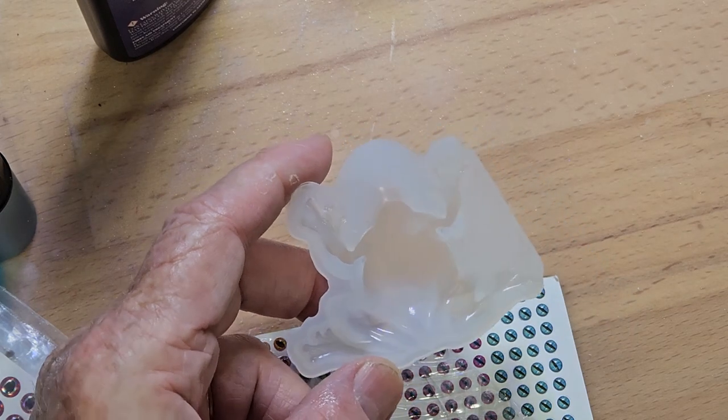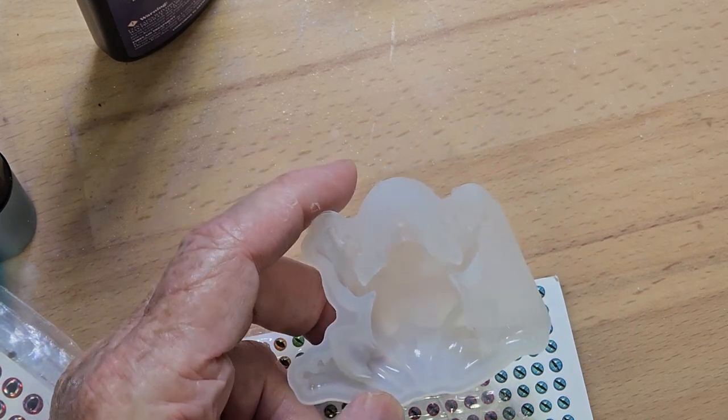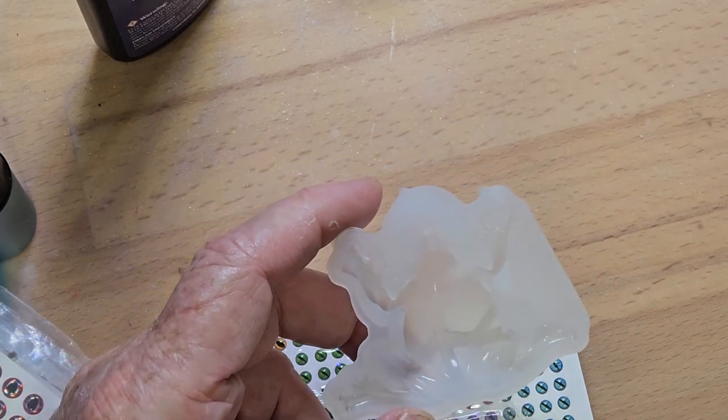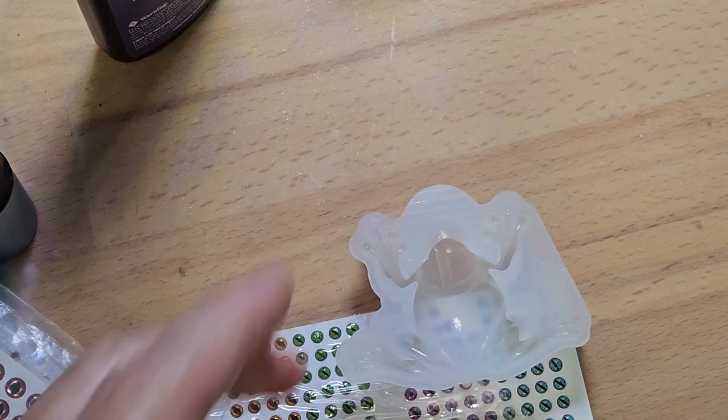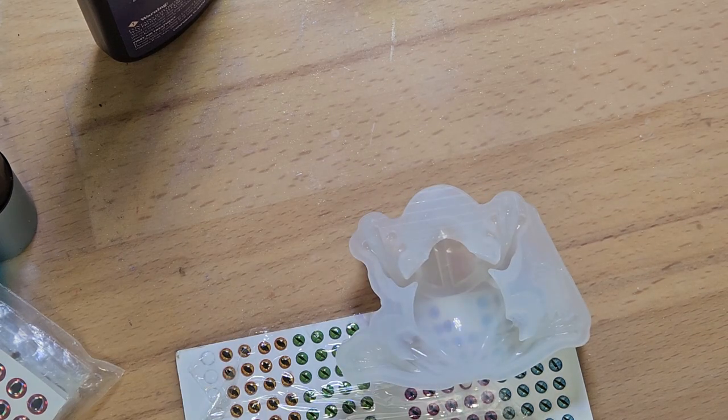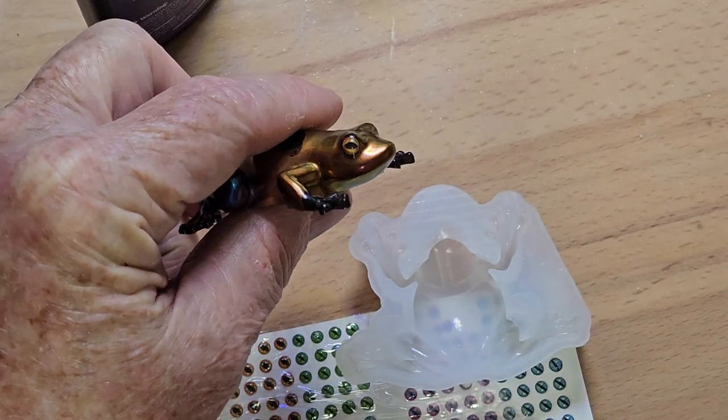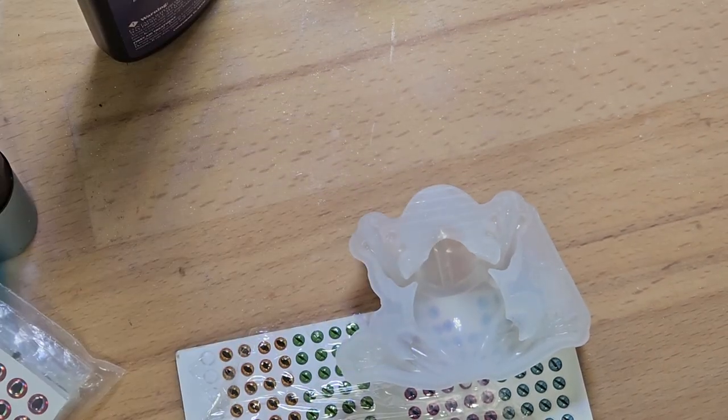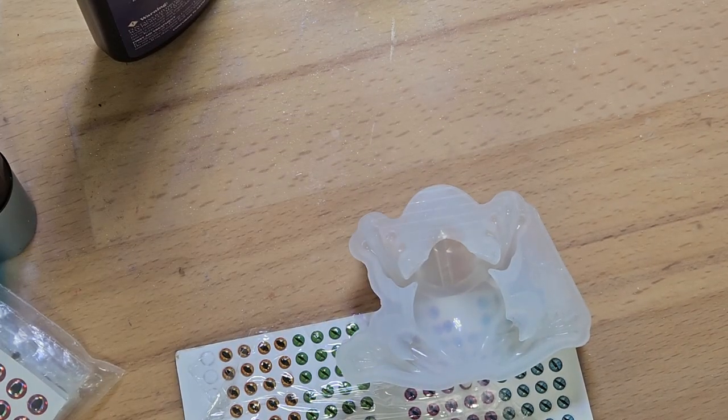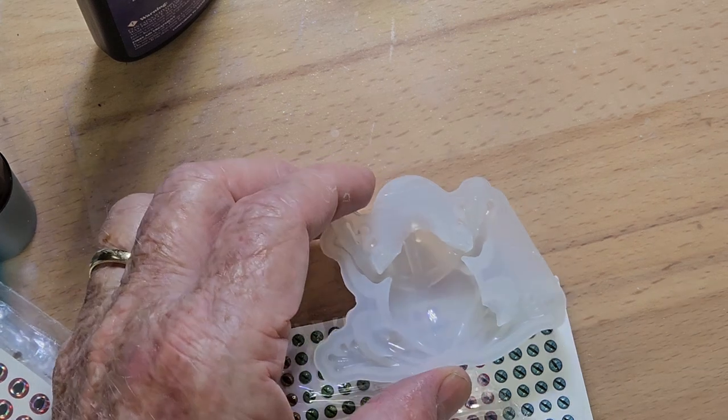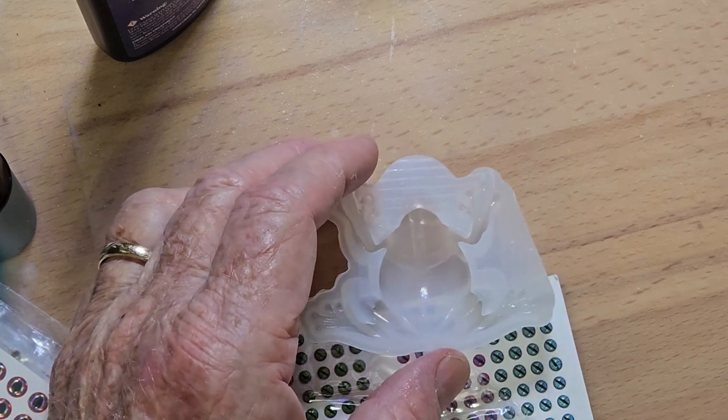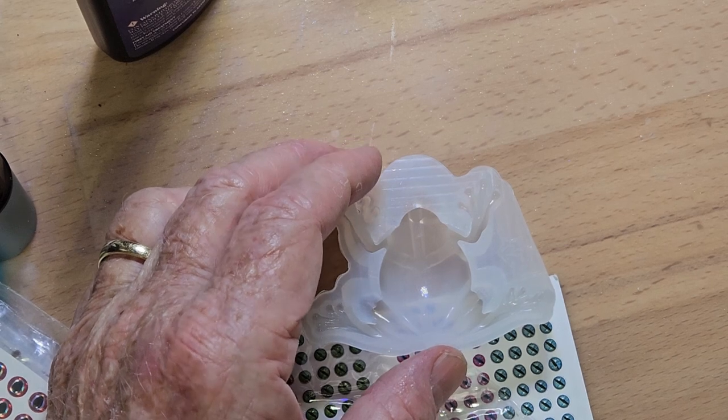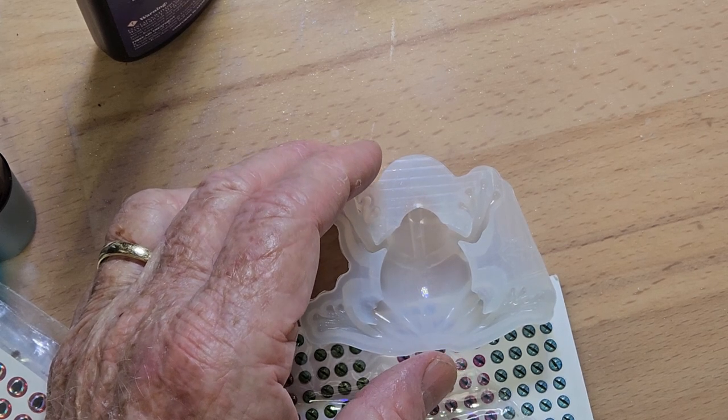Bass Resonator here. I have been asked numerous times how I get eyes in my frogs to look so realistic, and also in my turtles. Instead of just saying I UV resin eyes into place, I thought I would show you how I do that.